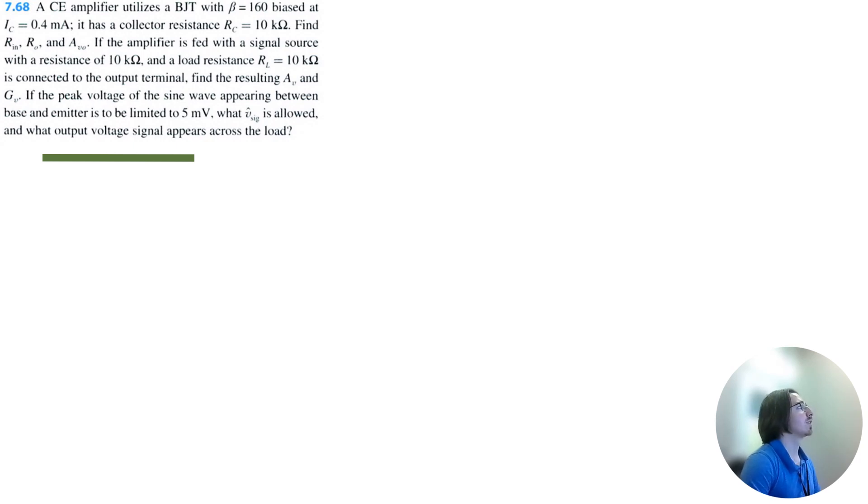It has a collector resistance of 10 kilo-ohms. Before we start answering the questions, let's draw this amplifier. I'm going to use the hybrid pi model. So this is a common emitter amplifier, which means we're amplifying at the emitter.